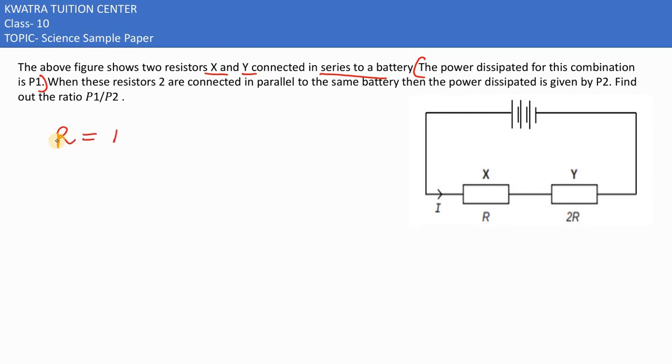First of all, we take total resistance. This would give you R plus 2R in series, so 3R becomes. How much power will happen in first case? It would be P1 equals to V² over RT, and RT here value is 3R.